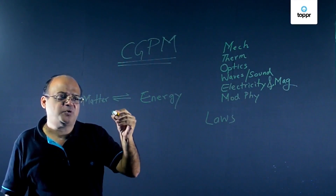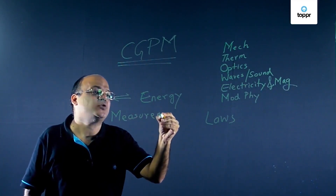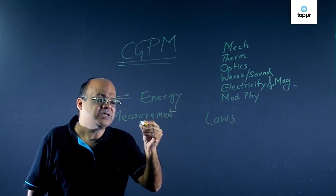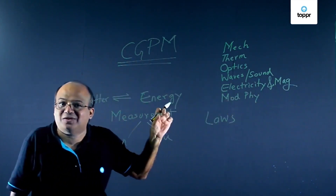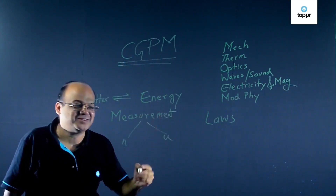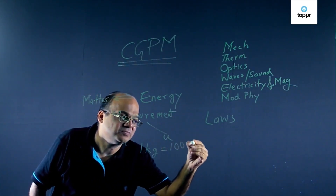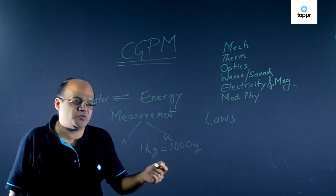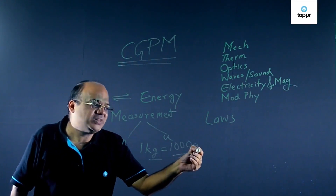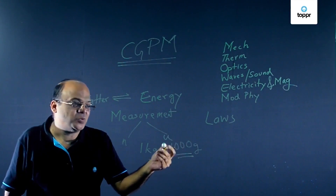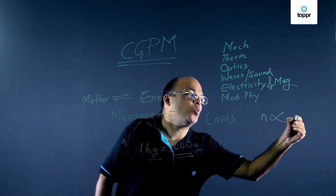Now any measurement we do — suppose we measure a length — we have got a number and a unit. If the unit is big, the number is small. If the unit is small, the number is big. For example, 1 kg is 1000 grams. Kg is the bigger unit and 1000 is the bigger number. So when the unit is small, the number is big, and when the unit is big, the number is small. Therefore, n is proportional to 1 by u.